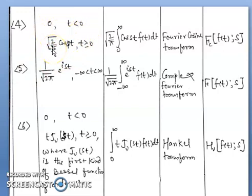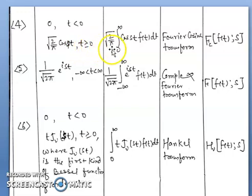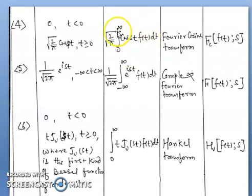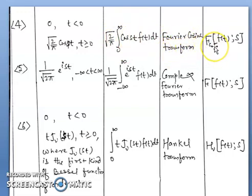For the fourth case, if k(s,t) = 0 when t is less than 0, and √(2/π) cos(st) when t is greater than or equal to 0, the integral becomes √(2/π) times the integral from 0 to infinity of cos(st) f(t) dt. This integral is known as the Fourier cosine transform, denoted by F_c{f(t); s}.